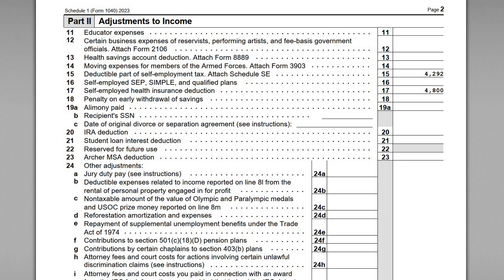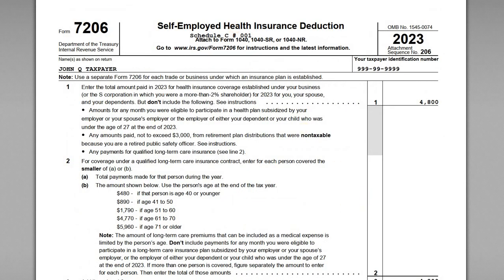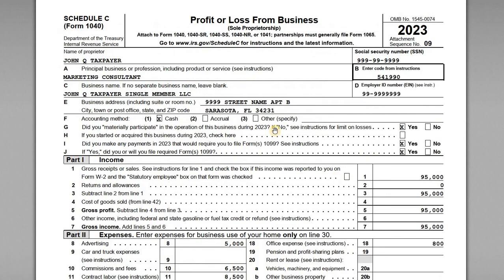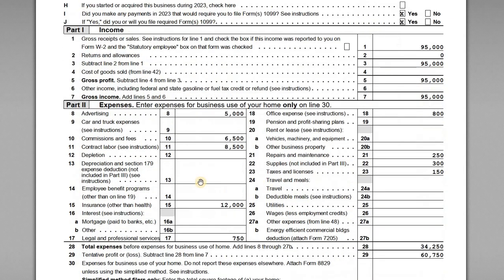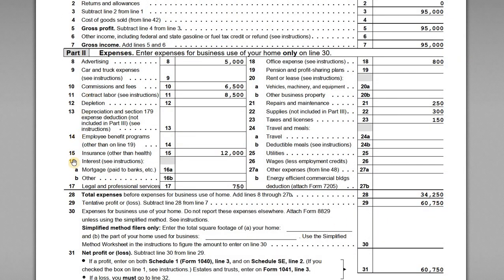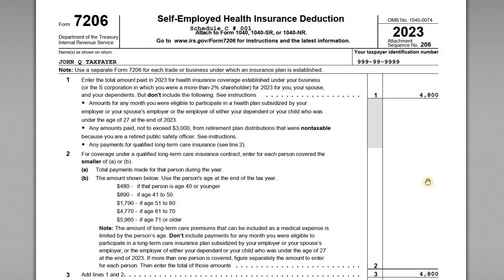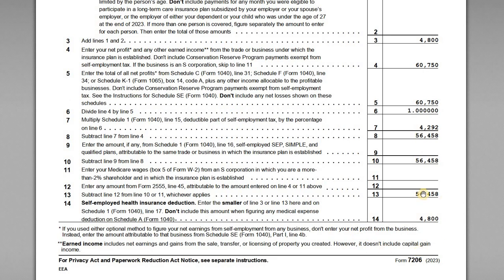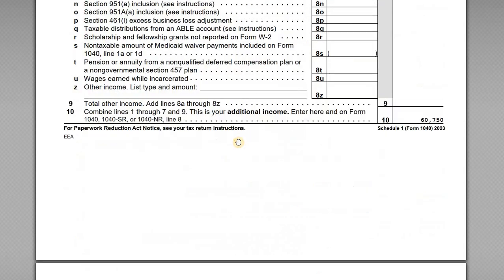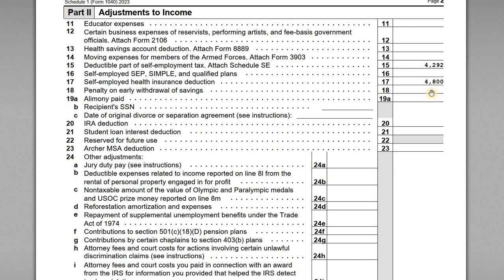When you're self-employed, you don't report your health insurance premiums on Schedule C. You have to complete Form 7206 separately to calculate how much self-employed health insurance you can actually deduct. John has enough earnings to deduct the full $4,800 amount, so he reports that on Schedule 1, Part 2, line 17.